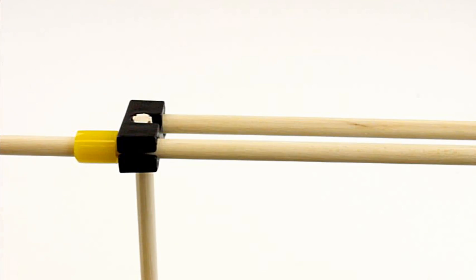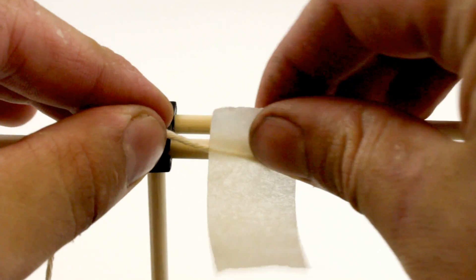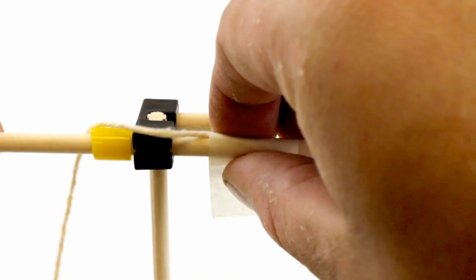Cut a piece of string that is 450 millimeters, which is about 1.5 feet, then tape it onto the dowel with the hub on it.